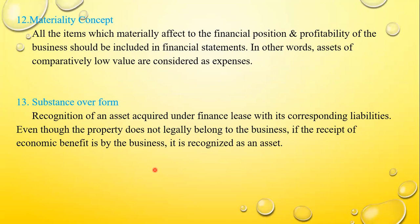Number thirteen is substance over form. This involves recognition of an asset acquired under a finance lease with its corresponding liabilities, even though the property does not legally belong to the business. If the receipt of economic benefit is by the business, it is recognized as an asset. Though you have bought it on finance lease and you are making income out of it, that is why you have to consider your lease properties as assets.